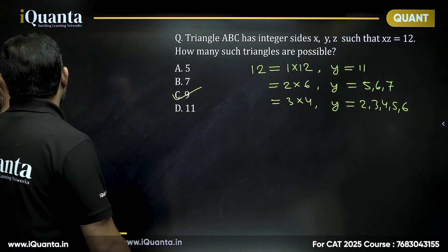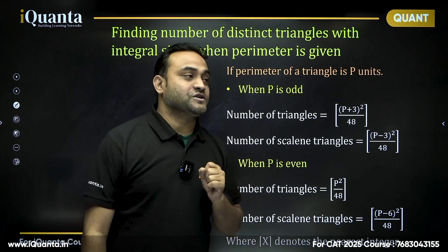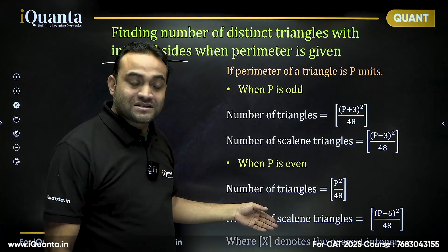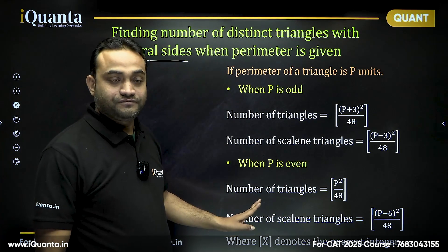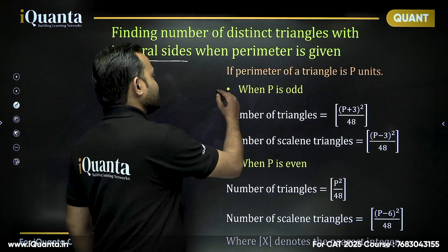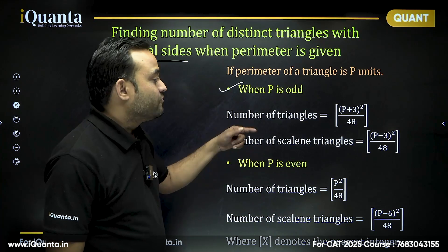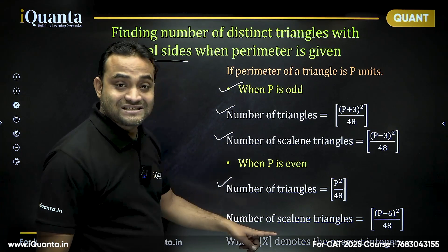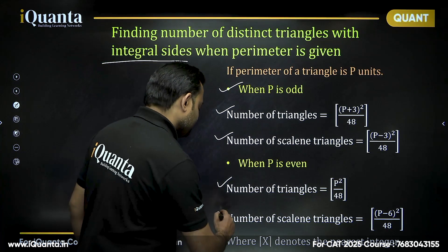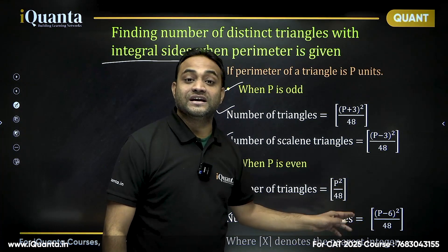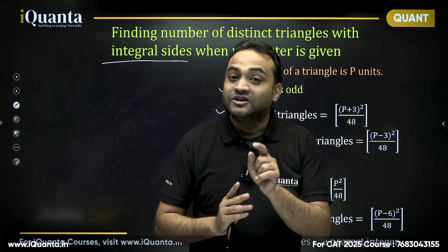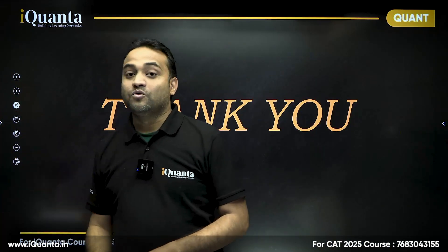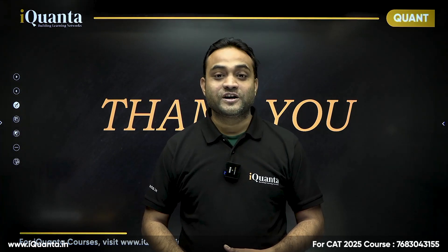To summarize the formulas for finding the number of distinct triangles with integer sides when the perimeter P is given: if P is odd, the total number of triangles is the nearest integer of (P + 3)² / 48, and scalene triangles use a related formula. If P is even, the total is the nearest integer of P² / 48. Note that the nearest integer means if you get 9.8, the answer is 10; if you get 9.1, the answer is 9. I hope this session was helpful — see you in the next video!